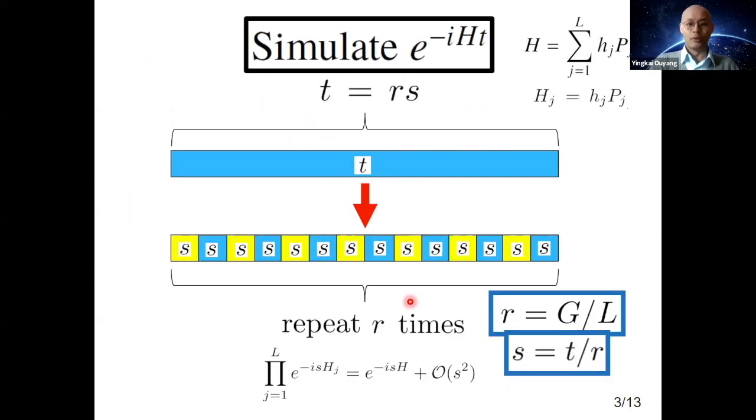We'll start with the problem of simulating e to the minus iHt. The trotterization approach is very well known. Instead of doing the H in one shot, we can do these elementary gates as a product of unitaries. But the problem is the simulation error scales as s squared, where s is the time. If we are interested to do a simulation of time t, where t is very large, this error term blows up.